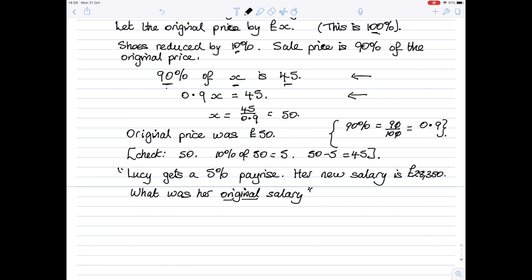Similar to above, I'm going to say let the original value be x pounds. The sentence that you have in English: her salary was 100%, the full amount. She had a pay rise of 5%, so her new salary is 105% of the original. So 105% of her original salary, which is the x pounds, is the amount they are giving you, which is £28,350.